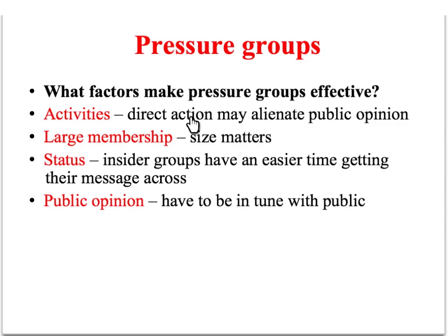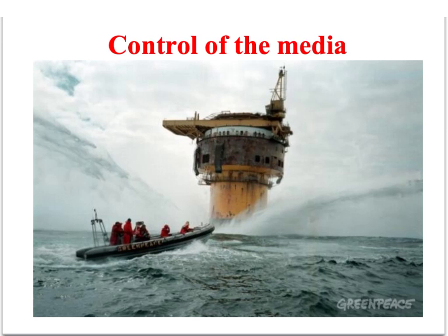What kind of things help make pressure group action effective? Direct action can be very successful if it generates positive media coverage, but there's always the danger it might backfire and alienate public opinion by engaging in obstructive actions. The size of membership matters — more members means more money and more people writing letters to MPs. The status of the pressure group is important, with insider groups often much more effective due to their access. Being in tune with public opinion is often a prerequisite for success, and control over media images is also really important.